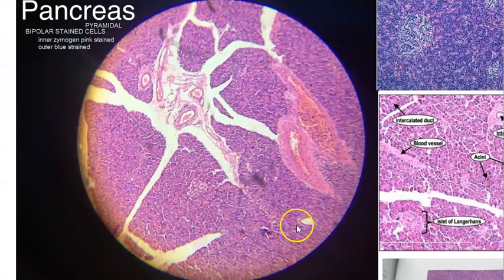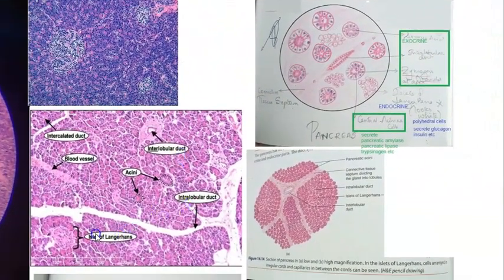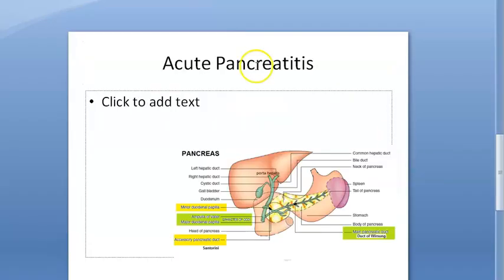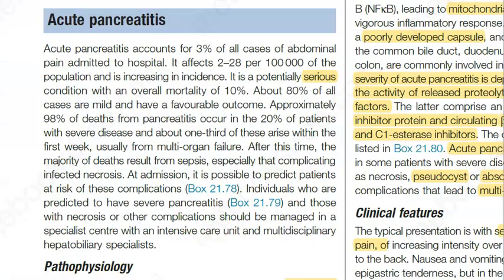Let's look at how the pancreas looks under the microscope — the microscopic structure. There are some acini and some ducts, and islets of Langerhans. Now let's move on to acute pancreatitis, which is a serious condition.